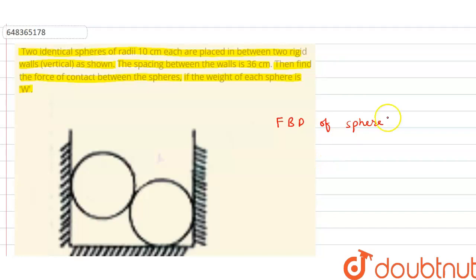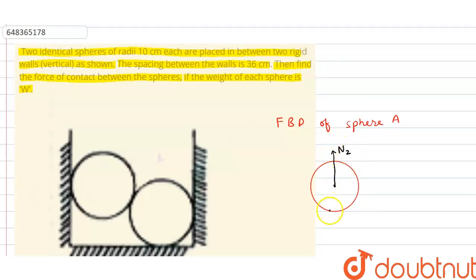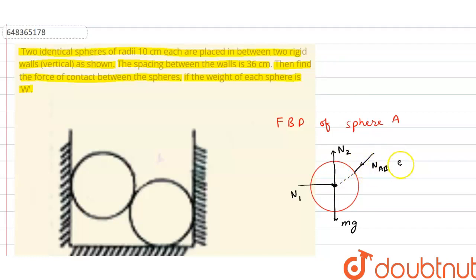For sphere A, there will be a force N2 acting upward, balanced by the force mg acting downward. N1 is acting horizontally, and in that direction there is another force Nab — the force exerted by sphere B on sphere A.